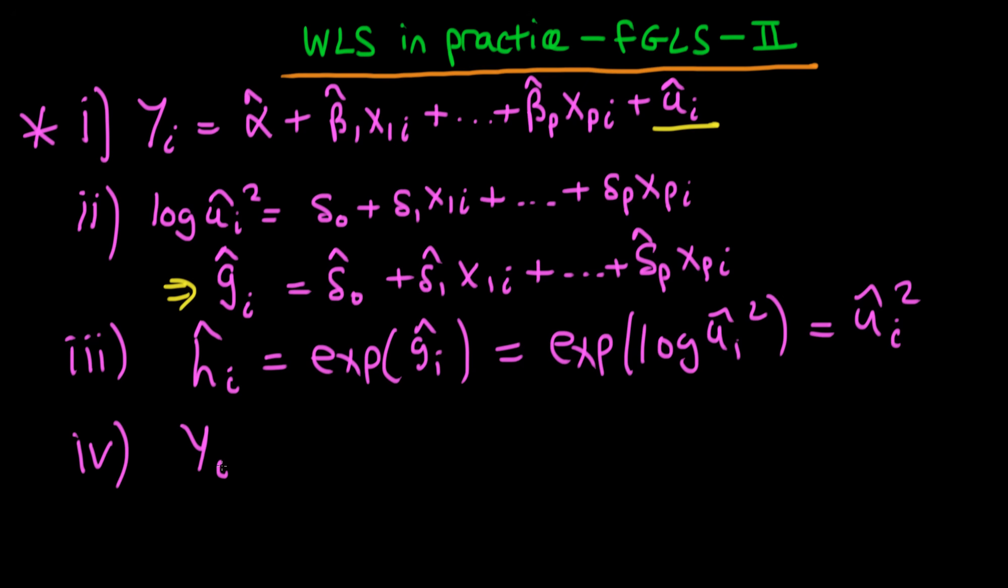Well the answer is just much like the case where we had if the variance of uᵢ given xᵢ was equal to σ² times just xᵢ in a bivariate case, then we actually divided both sides through by √xᵢ.